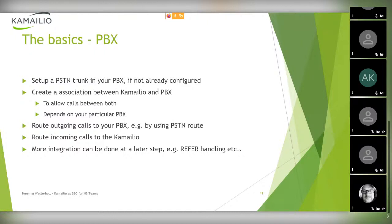Regarding the PBX, you need to set up a PSTN trunk in your PBX. You could use the UAC module in Kamailio for that, but in my experience it's much more reliable regarding different scenarios in Teams — call transfers, etc. — to use the PBX to set up your PSTN trunk there. You need to create an association between Kamailio and the PBX to allow calls going back and forth, and of course route the calls to your PBX. If you're using the default configuration, you can use the PSTN route which is in the default config.